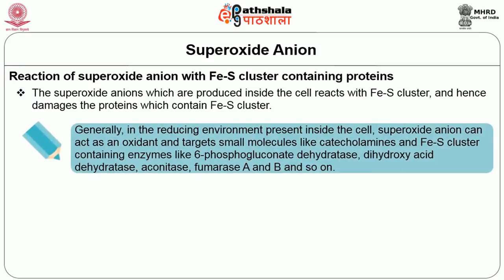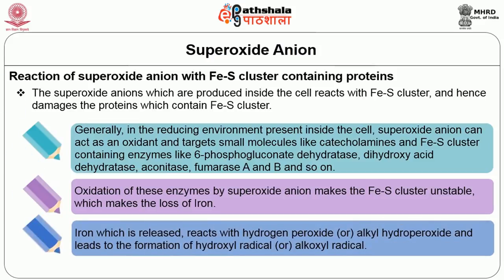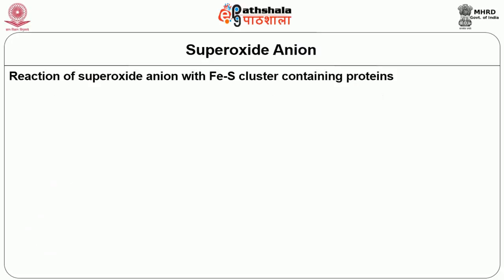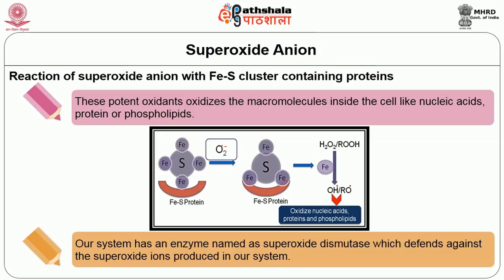In the reducing environment present inside the cell, superoxide anions act as an oxidant and target small molecules like catecholamines and iron-sulfur cluster-containing enzymes like 6-phosphogluconate dehydratase, dihydroxyacid dehydratase, aconitase, and fumarase A and B. Oxidation of these enzymes by superoxide anion makes the iron-sulfur cluster unstable, causing loss of iron. Iron which is released reacts with hydrogen peroxide or alkyl hydroperoxide and leads to the formation of hydroxyl radical or alkoxyl radical. These potent oxidants oxidize macromolecules inside the cell like nucleic acids, proteins, or phospholipids. Our system has an enzyme named superoxide dismutase which defends against the superoxide ions produced in our system.